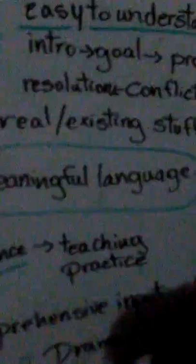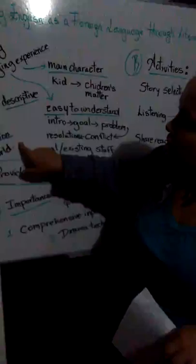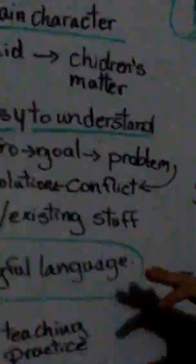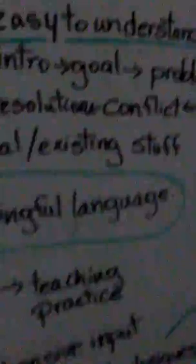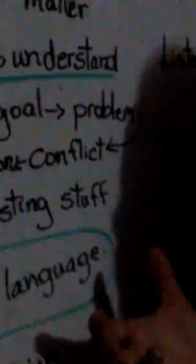But also it has to be a story or literature easy to understand in the sense that it needs to include an intro, a goal, a problem, a conflict, but also the resolution. It also has to include real existing stuff. I mean to make a connection with the world, right? So a connection with the story for students to know about the world. And also this story needs to be credible and descriptive in the sense that it will need to provide them meaningful language for a comprehensive input.